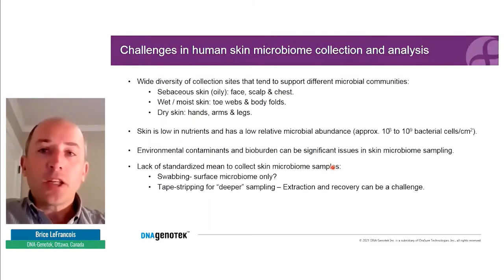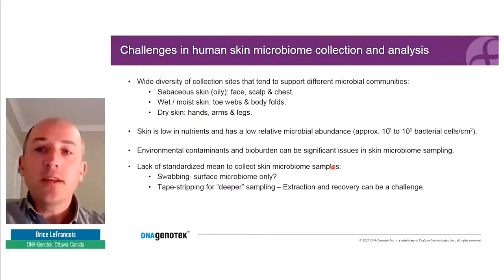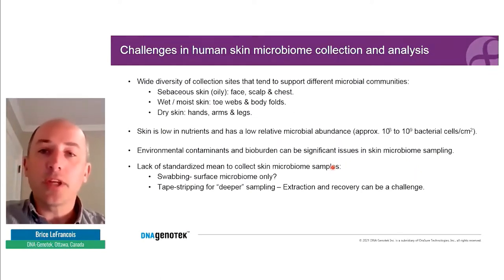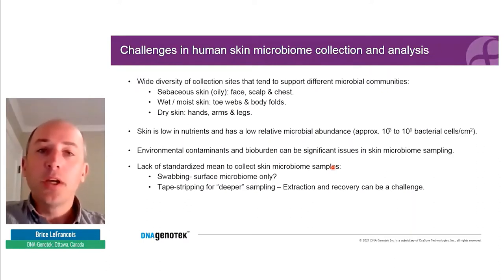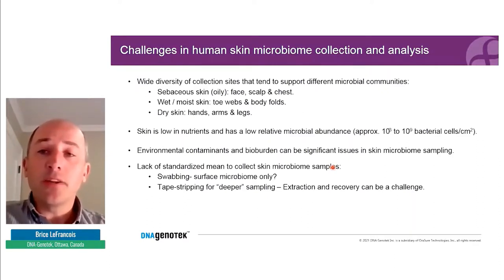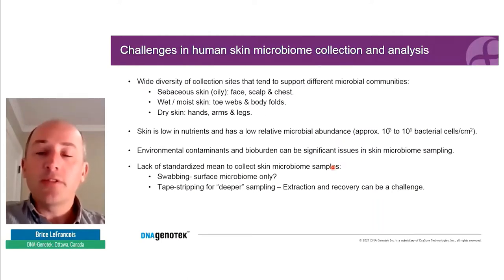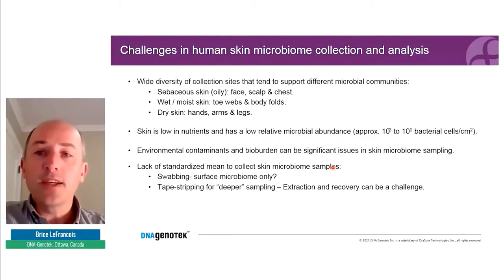There are many challenges when doing human microbiome skin sampling and analysis. The first one is that when looking at the human skin, there is a wide diversity of collection sites. Each of these sites tends to support different microbial communities, and skin can be divided into three main types. There's sebaceous or oily skin — typical examples would be the face, scalp, or chest.